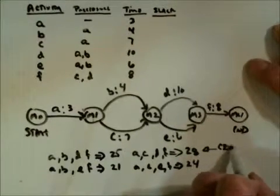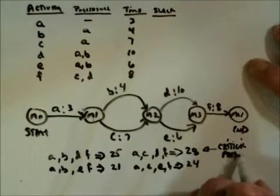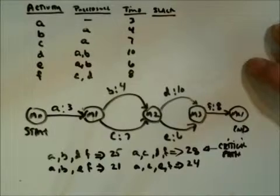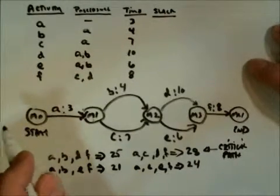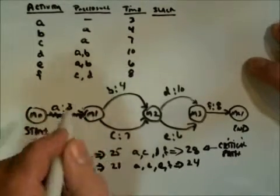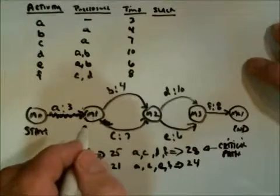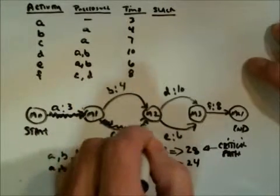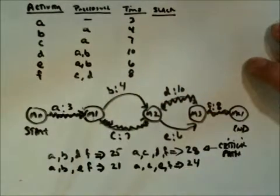Again, the critical path, the longest route through the network, is the length of time that it would take to do the job if you did it in the most efficient way possible. So let me write this as A through C is next, up through D, and then out through F. There's my critical path.